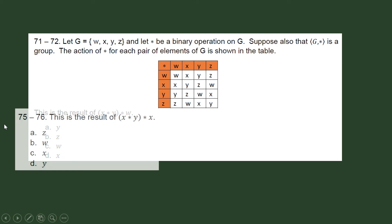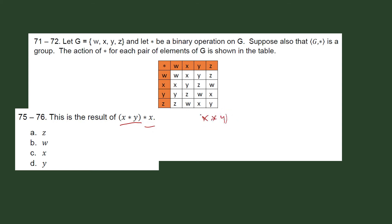This is the result of X star Y, then star X. You apply the operation first on X and Y, then star X. From the table, X star Y is Z, and then Z star W — Z star W is equal to Z. Our answer is letter A.